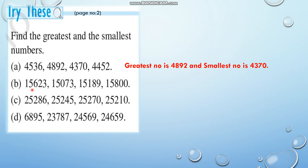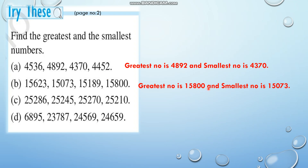Now look at the next one: 15,623; 15,073; 15,189; and 15,800. Comparing these numbers — 15,800 is the greatest one and the smallest one is 15,073. The greatest number is 15,800 and smallest is 15,073.